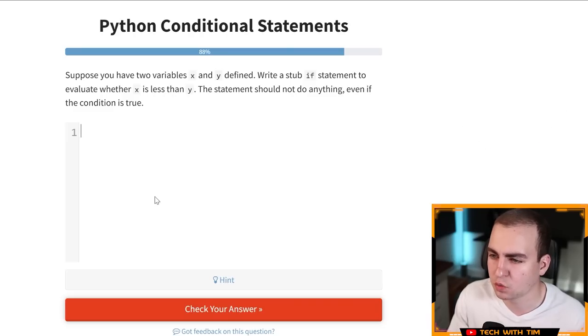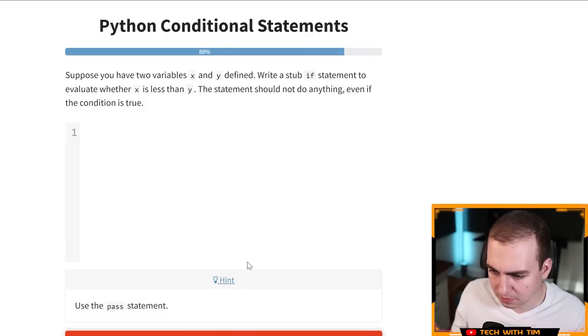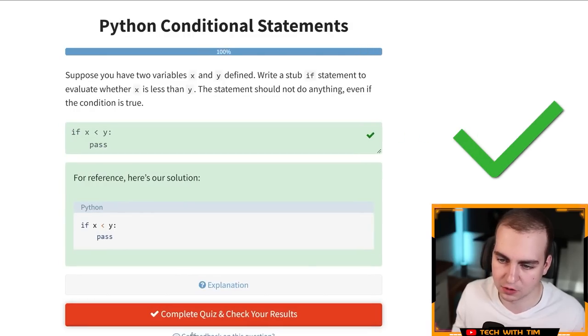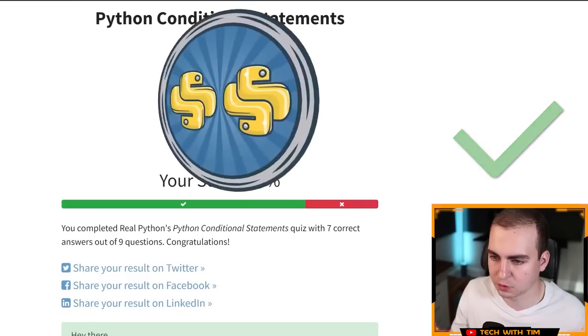Suppose you have two variables X and Y defined, write a stub if statement to evaluate whether X is less than Y the statement should not do anything. Even if the condition is true, right? Stub if statement, I imagine the stub if statement is, it's saying like just write an inline if statement that doesn't do anything at all. I don't know what it means by stub though. I let's get a hint here and use the past. Ah, gotcha. Okay. That makes sense now. So suppose you have X and Y register. If X is less than Y, if X less than Y, then just pass. Is that what they mean? Okay. That was, yeah. All right. Complete quiz and check results.